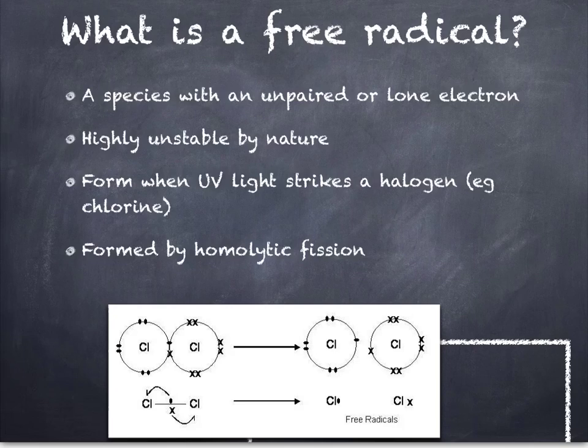They are highly unstable free radicals, and they usually form when UV light strikes a halogen. The UV light provides the energy for the homolytic fission to occur, which is a description of the way that the bond breaks. Homo meaning the same, and so therefore when the bond breaks, you end up with two identical products. But we'll look at this again more closely in a couple of slides.